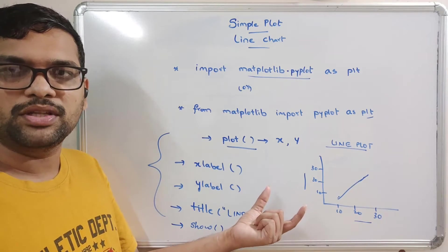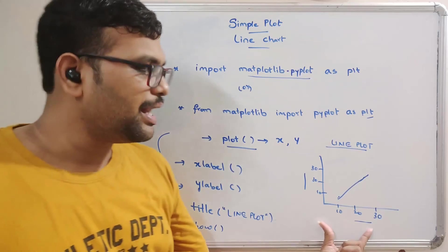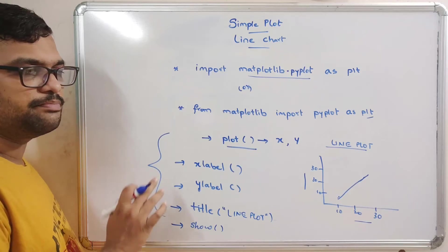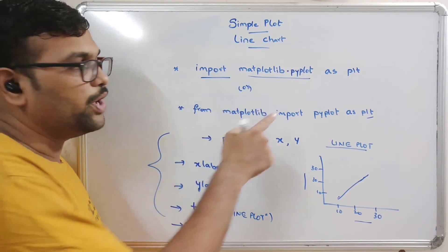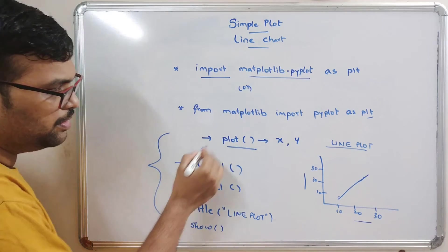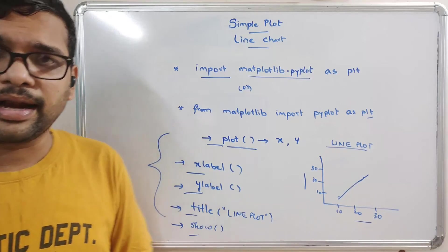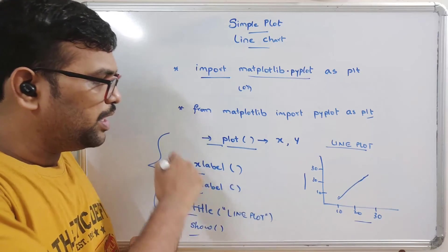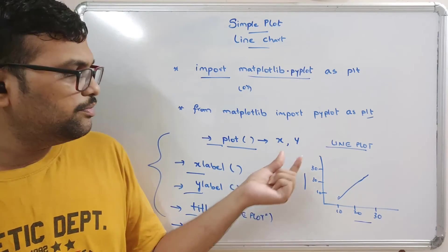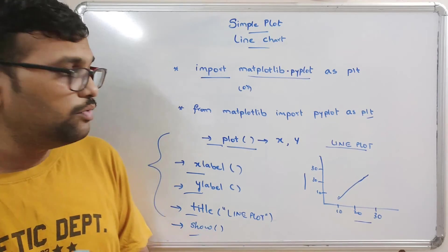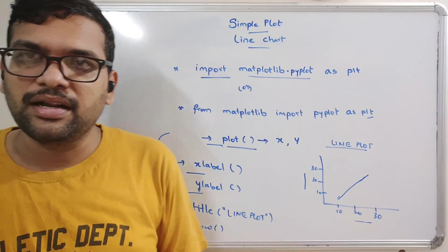To display the graph, we use the show method. If you apply show(), the graph will be displayed on the screen; otherwise it is represented as an object. So the workflow is: import matplotlib, use pyplot, then call plot(), xlabel(), ylabel(), title(), and show() — these are the basic functions to plot a simple line chart.